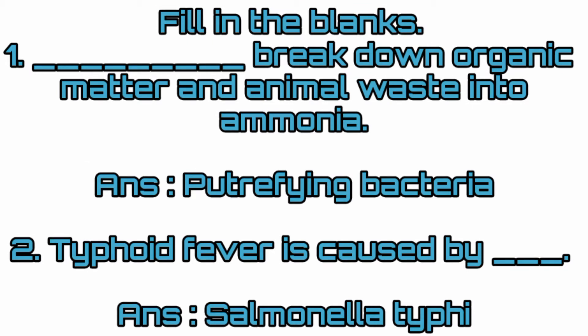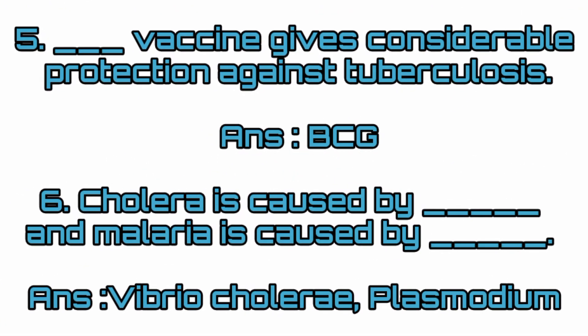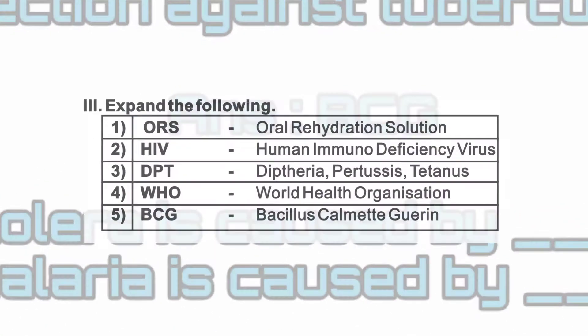Fill in the blanks. Bacteria break down organic matter and animal waste into ammonia — putrefying bacteria. Typhoid fever is caused by Salmonella typhi. H1N1 virus causes swine flu. The vector of viral disease dengue is Aedes aegypti mosquito. The BCG vaccine gives considerable protection against tuberculosis.